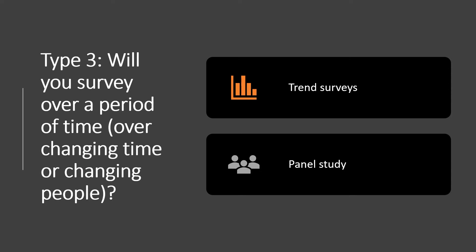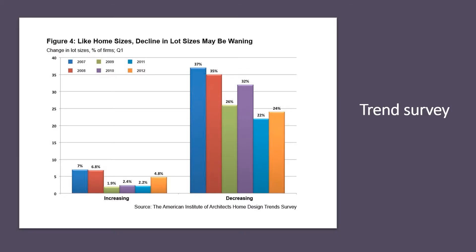The third category is classified by whether you will survey over a period of time, and if so, do you want to explore changing times or changing people? Under this category, there are two surveys: a trend survey and a panel study. A trend survey normally asks a similar group of respondents the same questions at two or more points in time. The goal is to see if classifications of individuals have changed over time. For example, imagine a three-phase survey conducted over a 20-year period — in 1986, 1996, and 2006.